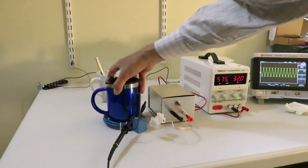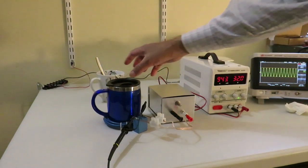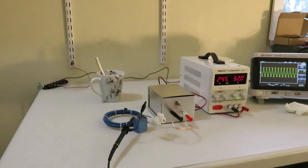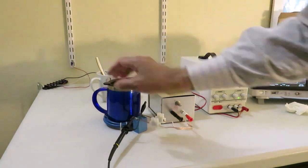Now I am placing the coffee mug inside. You can see the current jumps to 946 milliampere. The extra higher power is just going to heat the inside of the coffee mug.